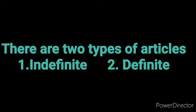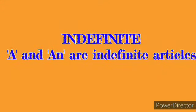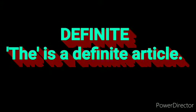Students, do you know articles have two types? Indefinite articles and definite articles. There are two types of articles: first, indefinite articles, and second, definite articles. Indefinite articles - 'a' and 'an' are indefinite articles. Definite articles - 'the' is called definite article.